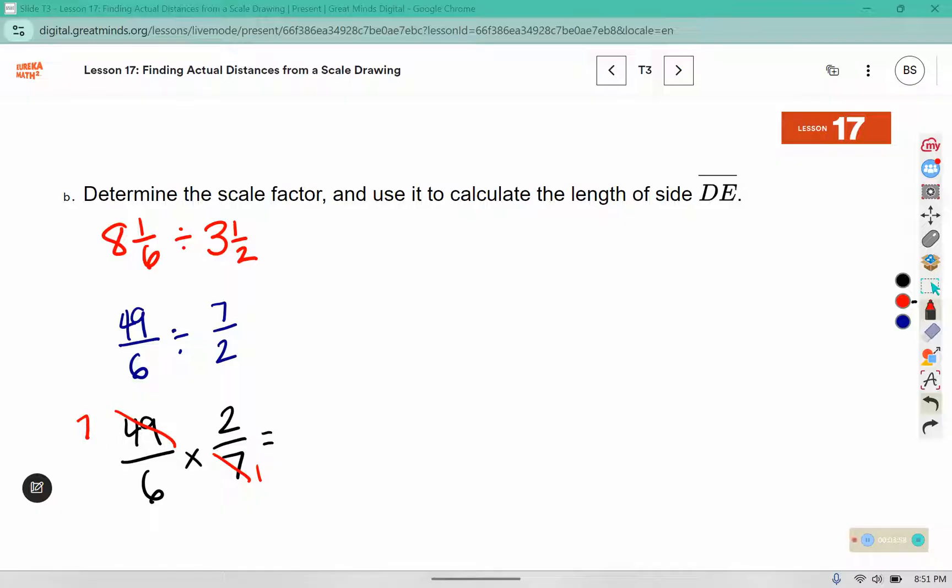Now I have 7 times 2 is 14 and 6 times 1 is 6. Both of those have a factor of 2 in them so I can reduce this. 14 is 7 twos and 6 is 3 twos. So our scale factor is 7 thirds.